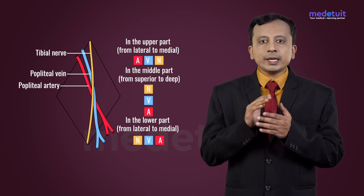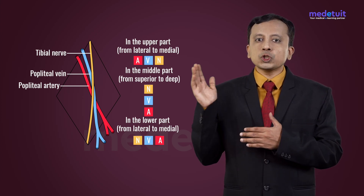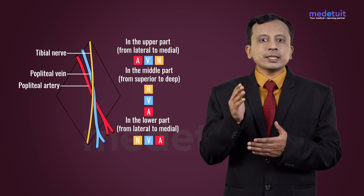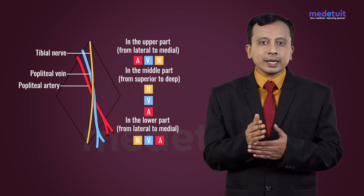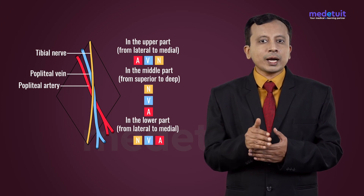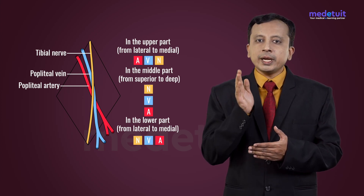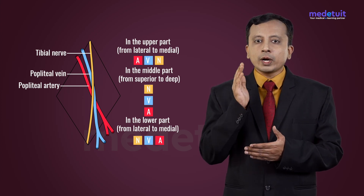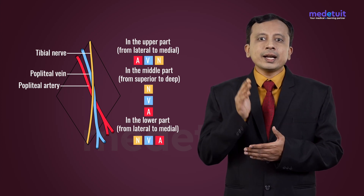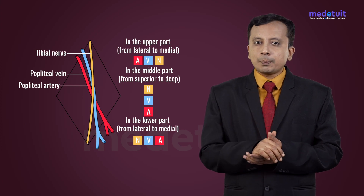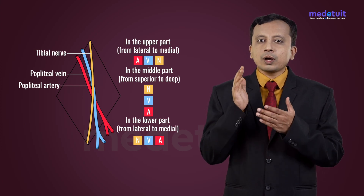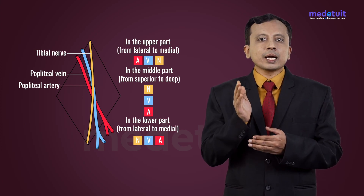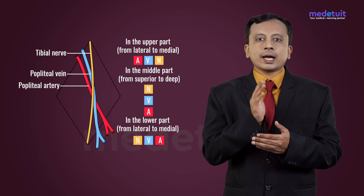The popliteal vein is initially present posterolateral to the artery. As it goes down, it crosses the artery, and in the lower part it is related medial to the artery. The tibial nerve is vertical and lies lateral to the artery in the upper part. It crosses the artery superficially, and in the lower part it comes medial to the artery.